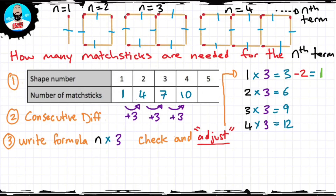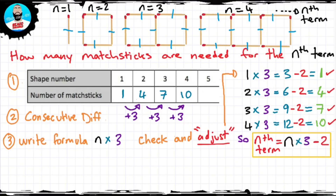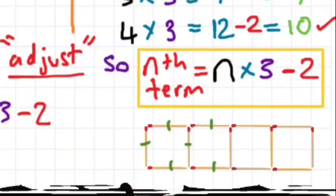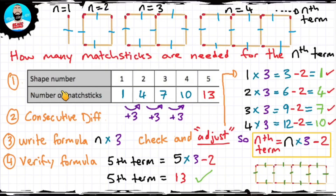Three minus 2 gives me 1 — correct. Six minus 2 gives me 4 — correct. Nine minus 2 gives me 7 — perfect. Twelve minus 2 gives me 10. So the nth term formula is n times 3 minus 2 for this sequence. Let's verify in step 4: the fifth term is 5 times 3 minus 2 which gives me 13. I'll draw the fifth term and count the matchsticks — I've got 13. That's absolutely correct.